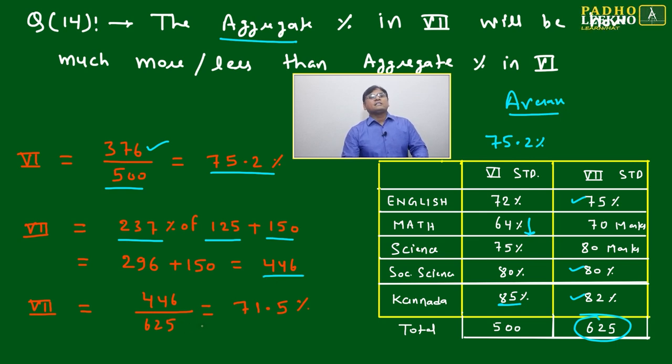296 plus 150 equals 446, out of not 500 but 625. Your total number has changed. This gives 71.5 percent. So the aggregate was 75 in sixth, and has become 71.5 percent in seventh.